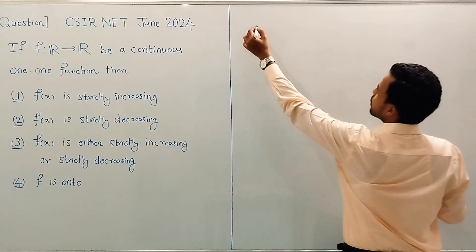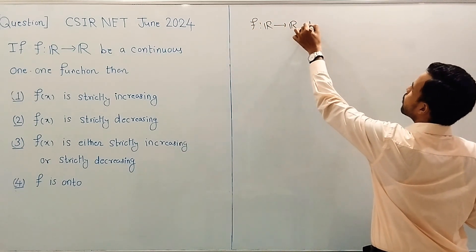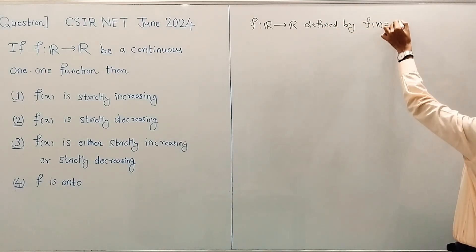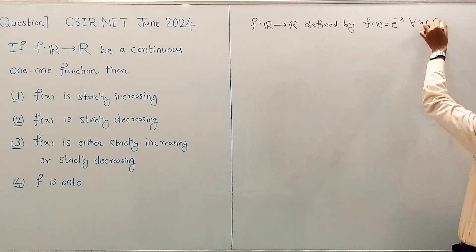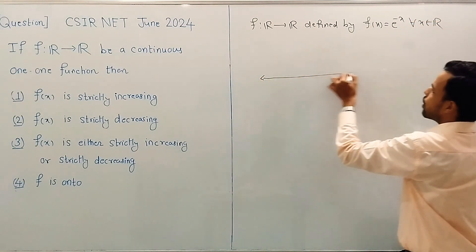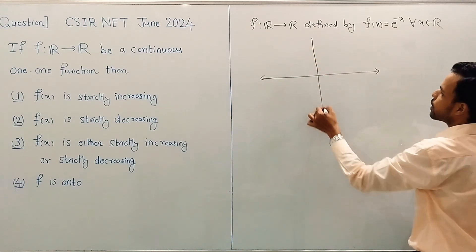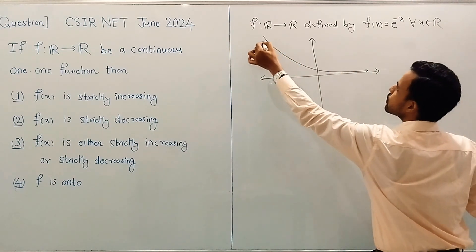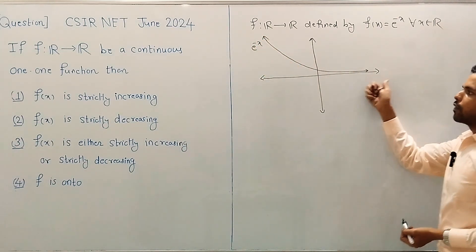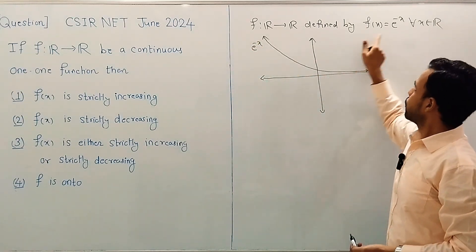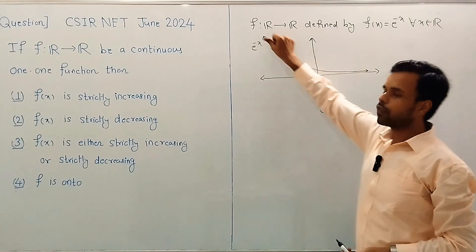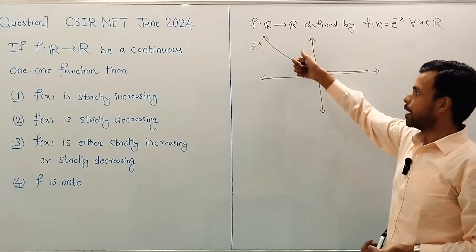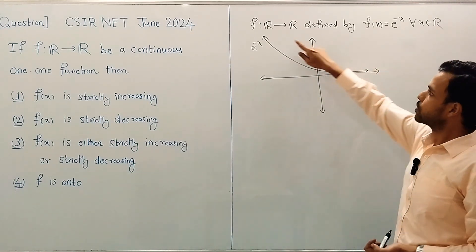For example, consider the function f from R to R defined by f(x) = e^(−x) for every x in R. Its graph looks something like this. From the graph, it is clear that f(x) = e^(−x) is a continuous function from R to R because the graph has no break and no jump.